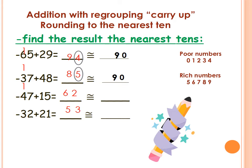The next one: 62. Make a circle around the ones — 2 is poor or rich, Primary 2? It's a poor number. So the 2 will be 0, and the 6 will be the same. When we round 62 to the nearest tens, it will be 60. The next one: 53. Circle the ones — 3 is poor or rich? It's poor. So it will be 0, and the 5 will be the same. The answer will be 50.